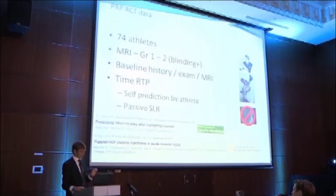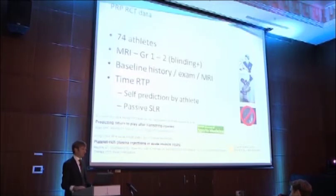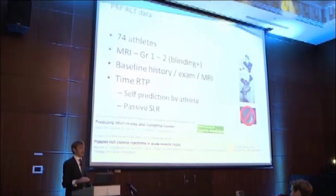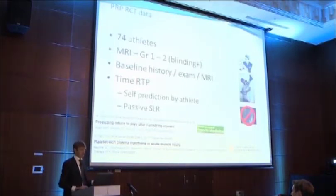We looked at which baseline parameters — history, examination findings, or MRI — would enable us to predict the time to return to play. The two parameters that came out as useful were: self-prediction by the athlete. At the end of taking the history, before they were examined, we just asked them how long do you think this is going to take? That was the single strongest predictor. The second predictor was a flexibility deficit. None of the MRI variables, either categorical or continuous, were able to add anything onto that.